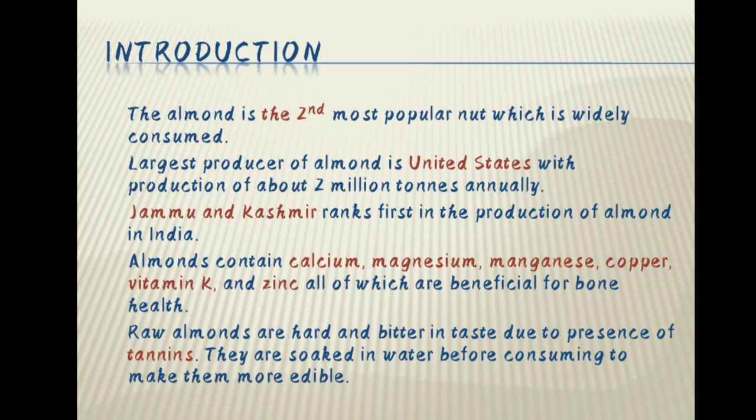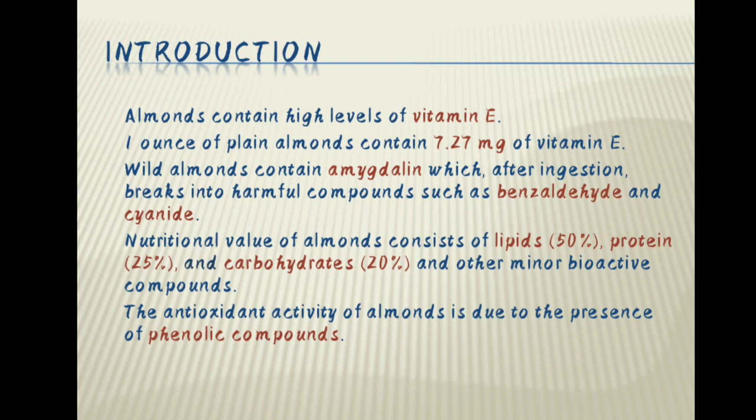They are soaked in water before consuming to make them more edible. Almonds contain a high level of vitamin E. One ounce of plain almonds contains 7.27 mg of vitamin E. Wild almonds contain amygdalan, which after ingestion breaks into harmful compounds such as benzaldehyde and cyanide. Nutritional value of almond consists of lipids 50%, protein 25%, carbohydrates 20% and other minor bioactive compounds. The antioxidant activity of almond is due to the presence of phenolic compounds.